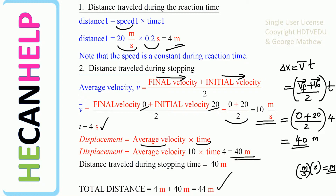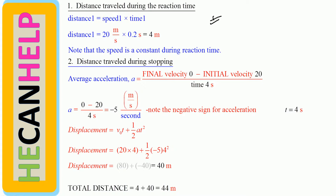No matter what approach we choose, the answer should be the same. Let's use another approach — Approach number 2. For Approach 2, there is no change for the distance during the reaction time: it is speed times time. Speed is 20 meters per second, time is 0.2 seconds, so you get 4 meters. Now for the distance traveled during stopping, we use the famous formula: Δx equals v₀t plus one-half a t squared.